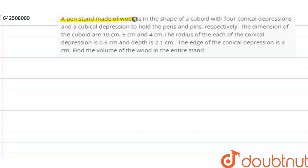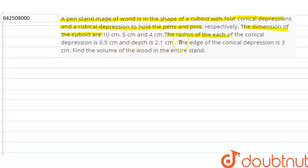A pen stand made of wood is in the shape of a cuboid with four conical depressions and a cubical depression towards the pins respectively. The dimensions of the cuboid are 10 cm, 5 cm, and 4 cm. The radius of each of the conical depressions is 0.5 cm and depth is 2.1 cm. The edge of the cubical depression is 3 cm. Find the volume of wood in the entire pen stand.